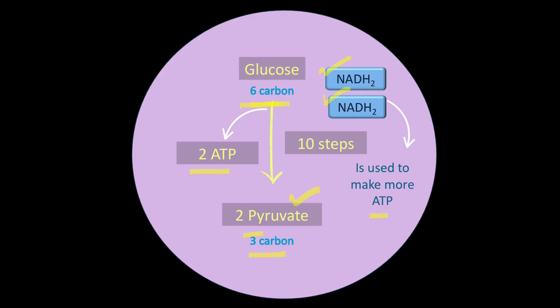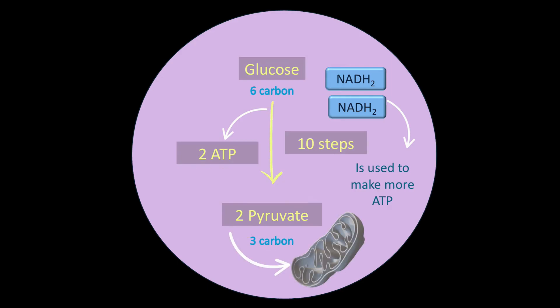Now, once this pyruvate has been produced, to move on to the next stage of aerobic respiration, this pyruvate needs to be transferred to the mitochondria — specifically the mitochondrial matrix.